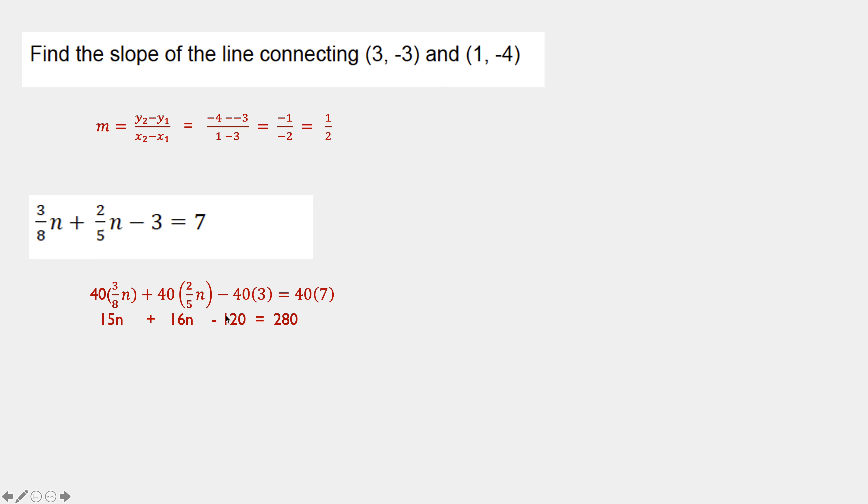40 times 3 eighths is 15n. 40 times 2 fifths is 16n minus 120 equals 280. So, 31n minus 120 is 280. Adding 120 to both sides, I get 31n is 400. Dividing by 31, I get 400 over 31. Is that a clean-looking type of question? No. But a lot of times, these fractional equations are not clean in the end. So, it is a correct solution to this question.